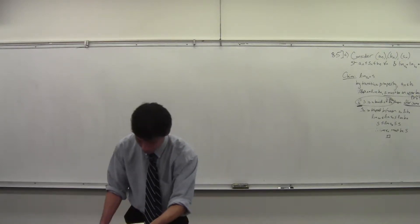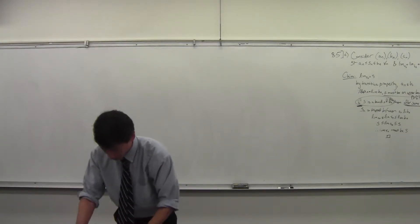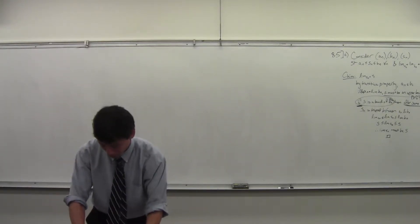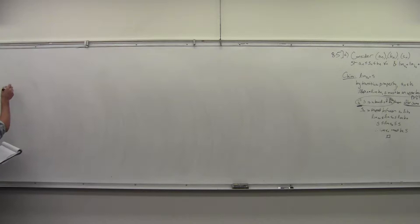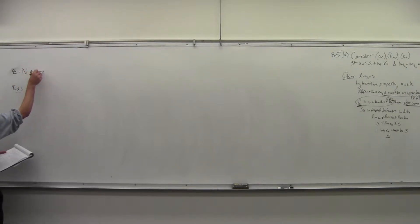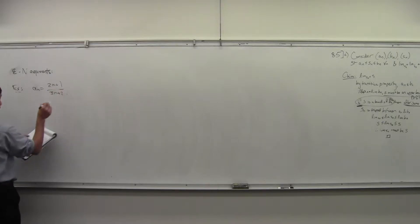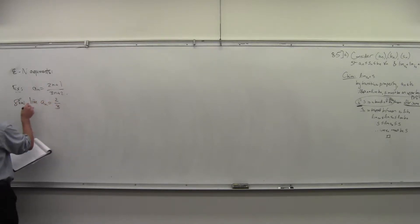We're doing these epsilon-N arguments. Our last example was the sequence a_n = (2n+1)/(3n+2), and we wanted to show that the limit of this was 2/3 as n goes to infinity.